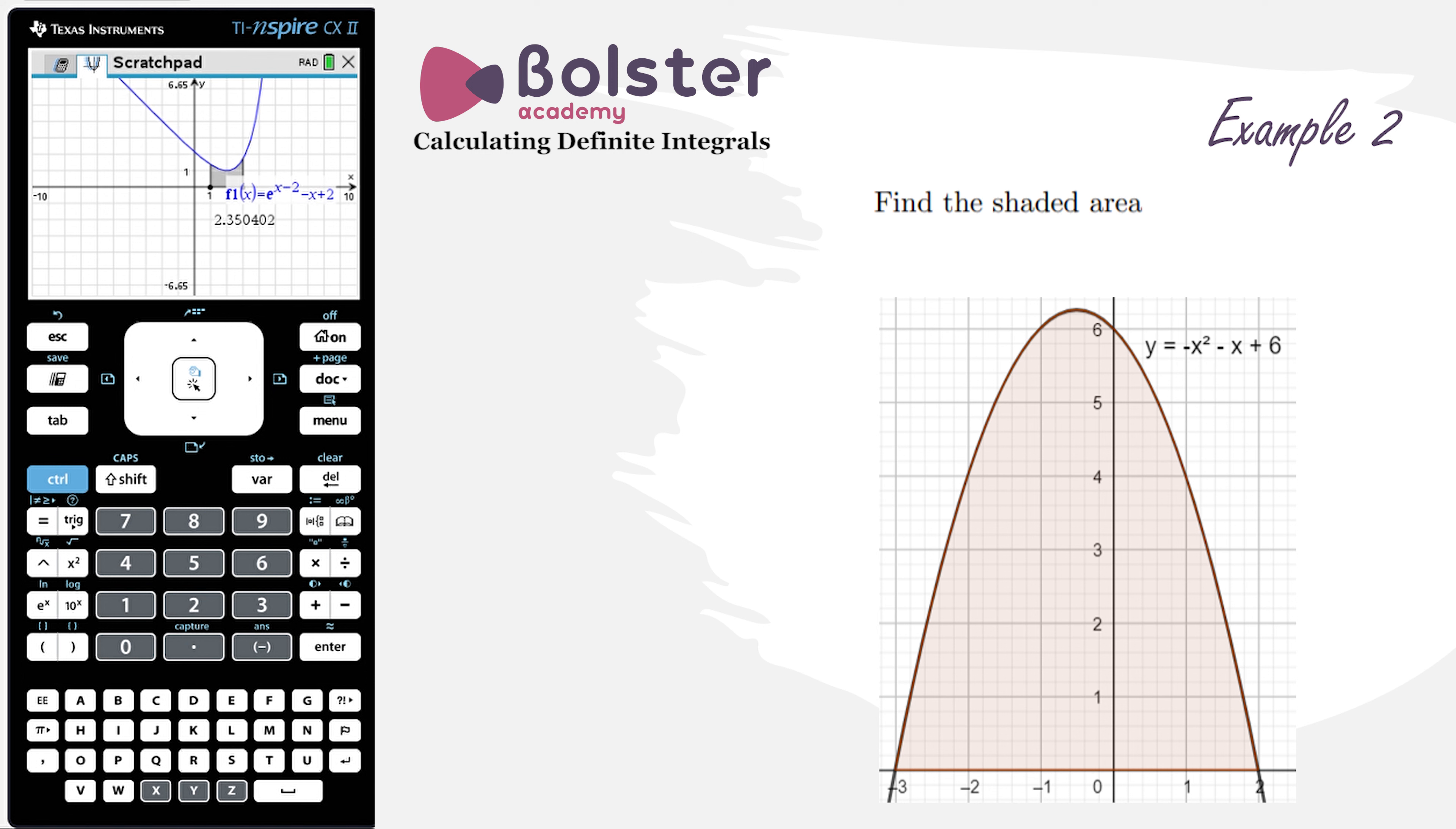So we know what the function is, it's minus x squared minus x plus 6, but we don't know what our limits of integration are. So we have to look and see from what point on the x-axis am I starting, and up until what point am I finishing.